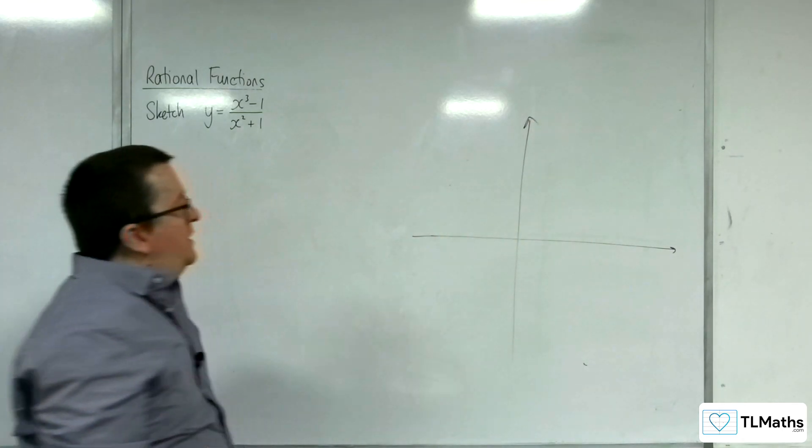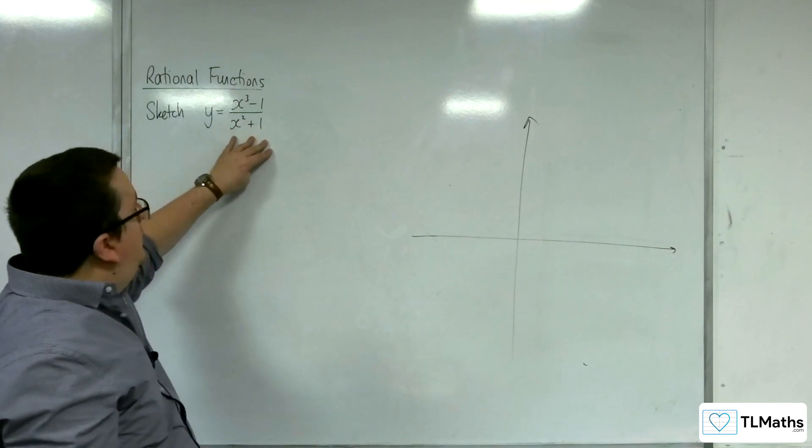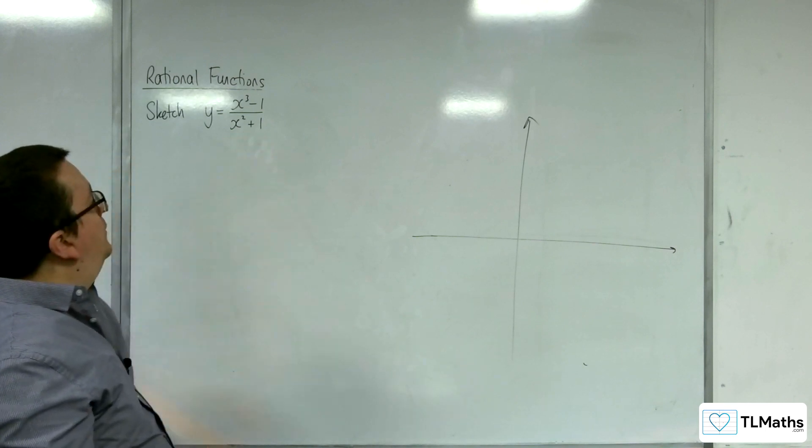Vertical asymptotes will exist when the denominator is 0. The denominator is always greater than or equal to 1, so there's no point where it's 0, so there are no vertical asymptotes.